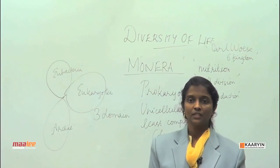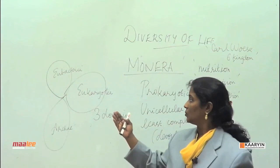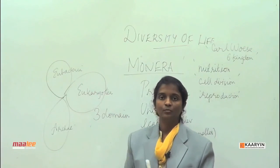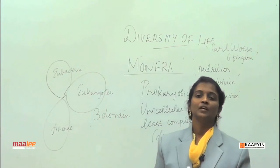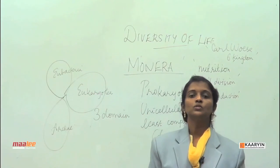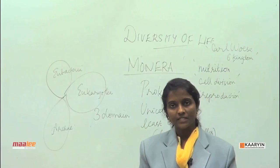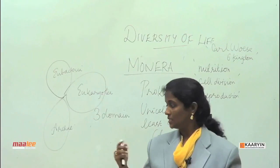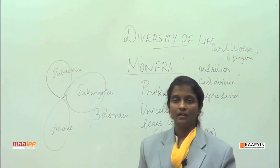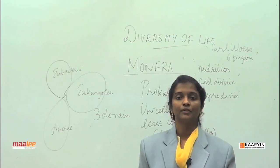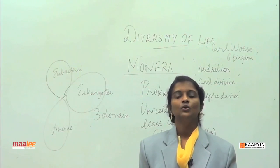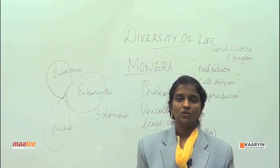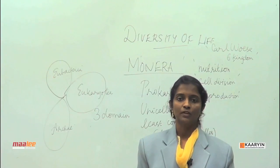If you want to understand the rationale behind Carl Woese bifurcating Eubacteria and Archaebacteria from Monera, you will have to wait for the next class on the diversity of life.